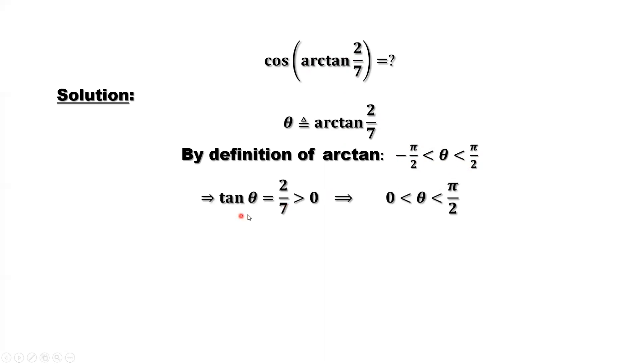Because tangent of theta equals 2 over 7, which is bigger than zero, we imply this arc tangent is between zero and half π. That means theta is in the first quadrant.